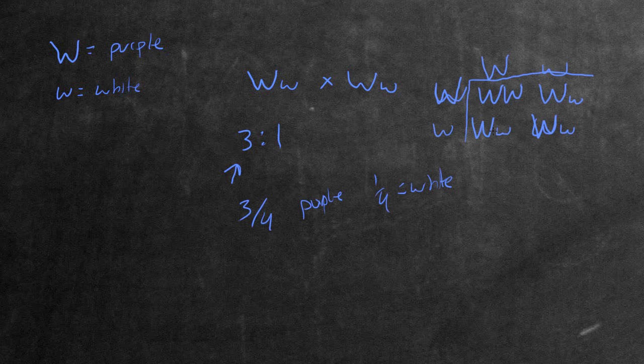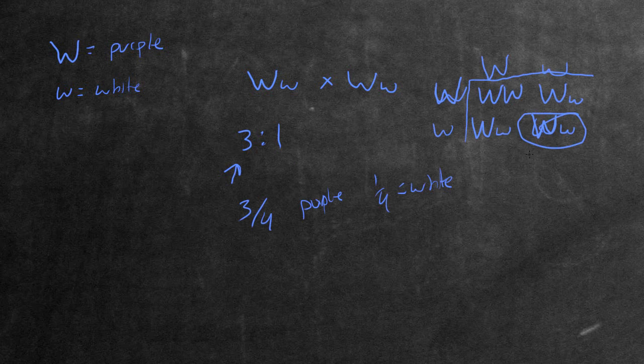So if we did a Punnett square quick, this is a pretty messy example, but this one right here, that one is homozygous recessive. So those are two little w's. Now in order to breed true, which means to breed purple.